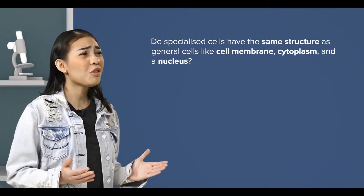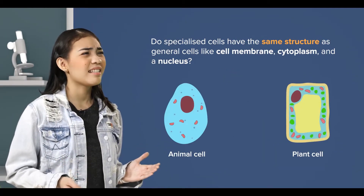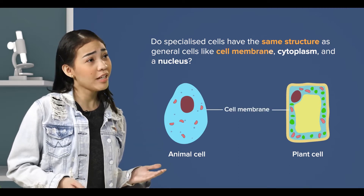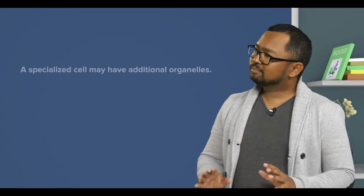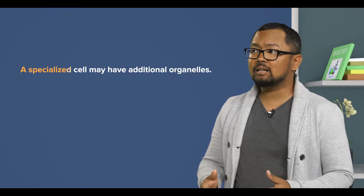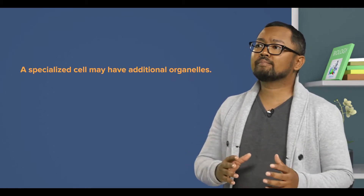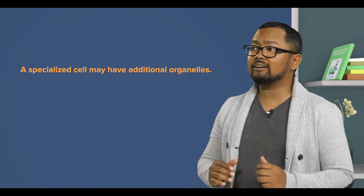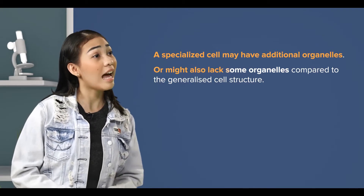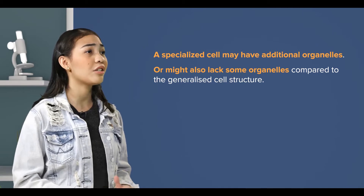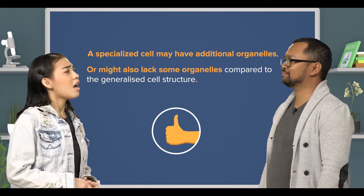But do they have the exact same structure? As in, do they have a cell membrane, cytoplasm, and a nucleus? No. A specialized cell may have additional organelles compared to the generalized cell structure. Or they might also lack some organelles compared to the generalized cell structure.